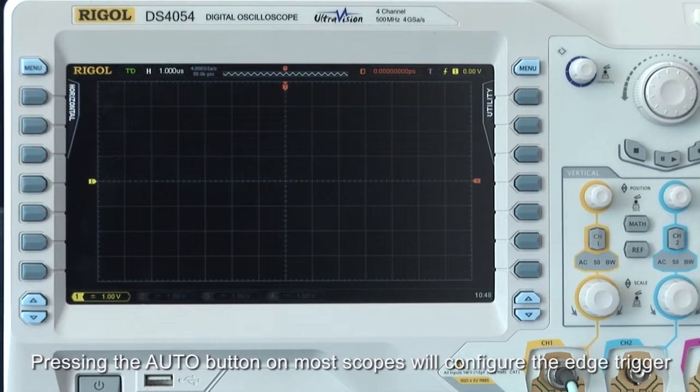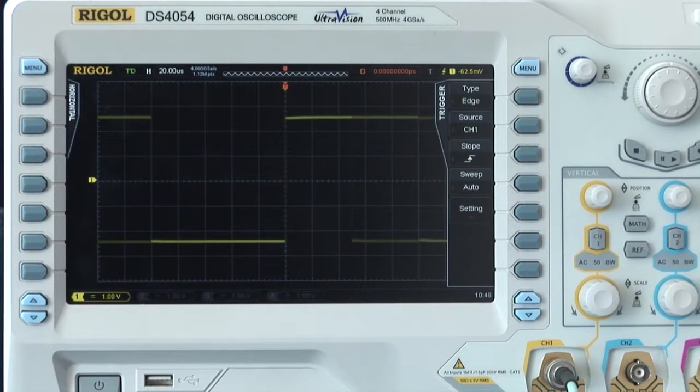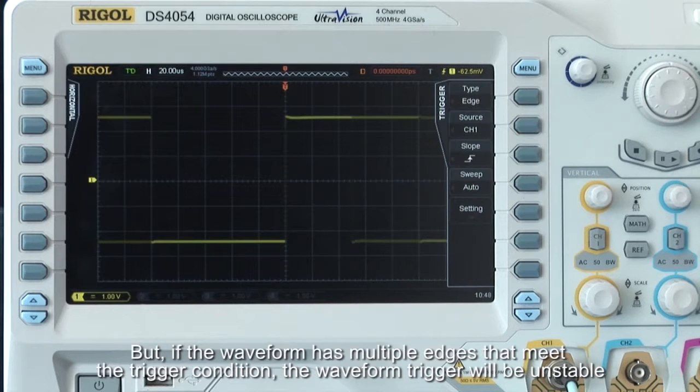Pressing the auto button on most scopes will configure the edge trigger. If the waveform has multiple edges that meet the trigger condition, the waveform trigger will be unstable.